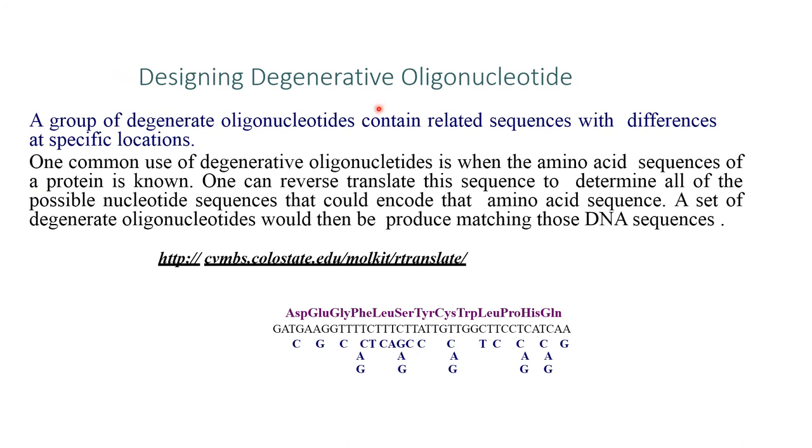Designing degenerate oligonucleotide sequences: a group of degenerate oligonucleotides contain relative sequences with differences at specific locations. One use of degenerate oligonucleotides is when the amino acid sequence of the protein is known. One can reverse translate this sequence to determine all the possible nucleotide sequences that could encode that amino acid sequence.